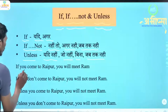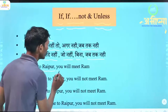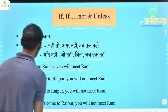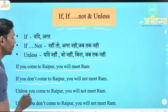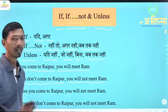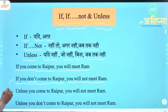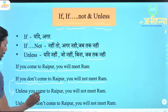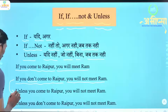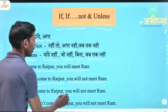Example: 'If you come to Raipur, you will meet Ram.' — Yadi tum Raipur aoge, toh tum Ram se miloge. 'If you do not come to Raipur, you will not meet Ram.' — Yadi tum Raipur nahi aoge, toh tum Ram se nahi miloge. Yahaan pe joh 'if' hai aur 'don't' hai, means 'if not' wala hai, wo 'unless' ki jaisa hota hai. Toh iski jagah pe hum unless ka use kar sakte hain. 'Unless you come to Raipur, you will not meet Ram.' Means jab tak ya yadi tum Raipur nahi aoge, tum Ram se nahi miloge.